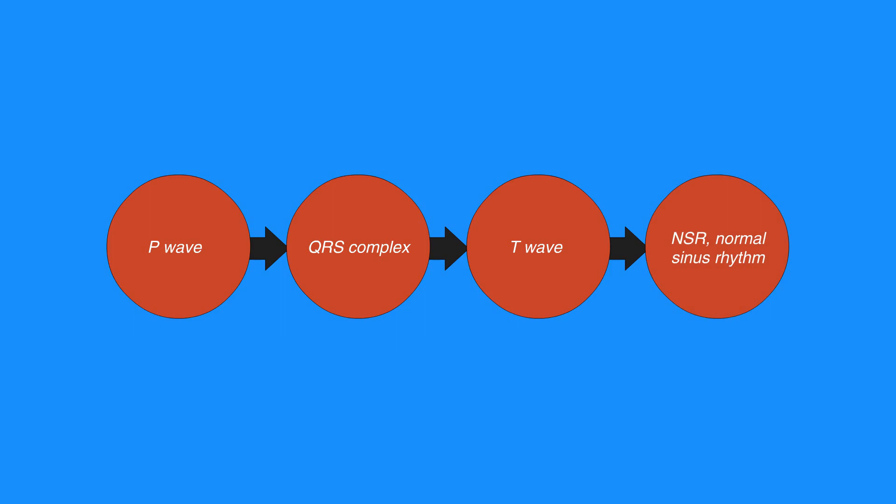Abnormalities in the conduction system can cause delays in the transmission of the electrical impulse and are detected on the ECG. These deviations from normal conduction can result in dysrhythmias, such as heart blocks, pauses, tachycardias, bradycardias, blocks, and dropped beats.